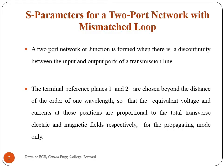S parameters for a two-port network with mismatched load. A two-port network or junction is formed when there is discontinuity between the input and output ports of a transmission line. The terminal reference planes one and two are chosen beyond the distance of the order of one wavelength so that the equivalent voltage and currents at these positions are proportional to the total transverse electric and magnetic fields respectively for the propagating mode only. These circuits are analyzed using S matrix formulation.